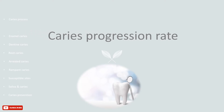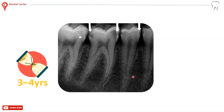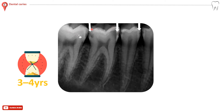Caries progression rate: although it has been suggested that the mean time that lesions remain confined radiographically to the enamel is three to four years, there is great individual variation and lesions may even regress. The rate of progression through dentine is unknown; however, it is likely to be faster than through enamel, since it is more permeable.